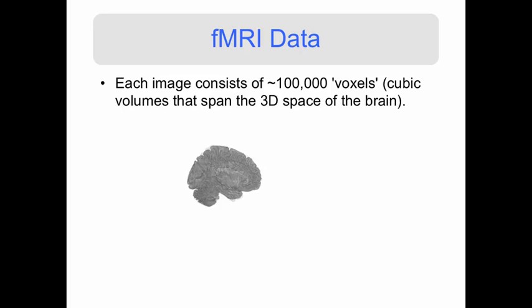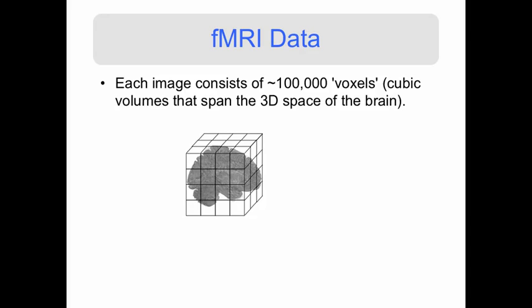So what does fMRI data look like? Each image consists of roughly 100,000 different volume elements or voxels. These are cubic volumes that span the three-dimensional space of the brain. Let's consider that we have a brain and we split it up into 100,000 different boxes of equal size — these are the voxels.